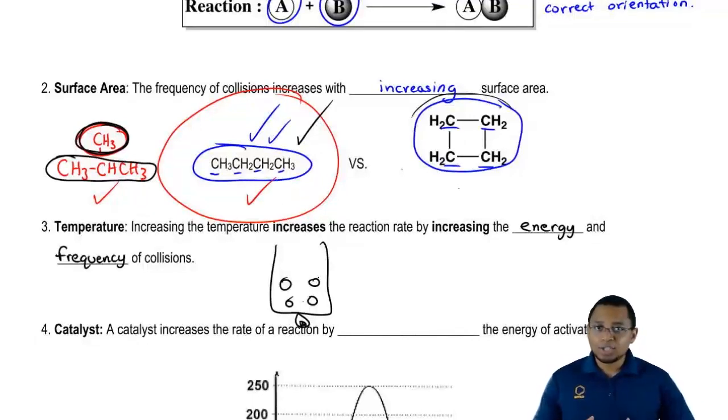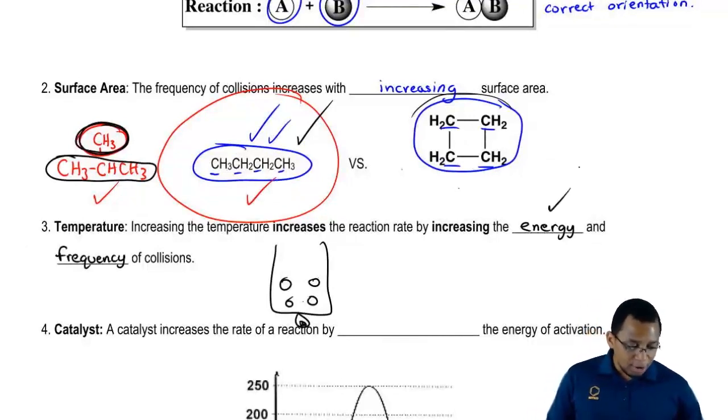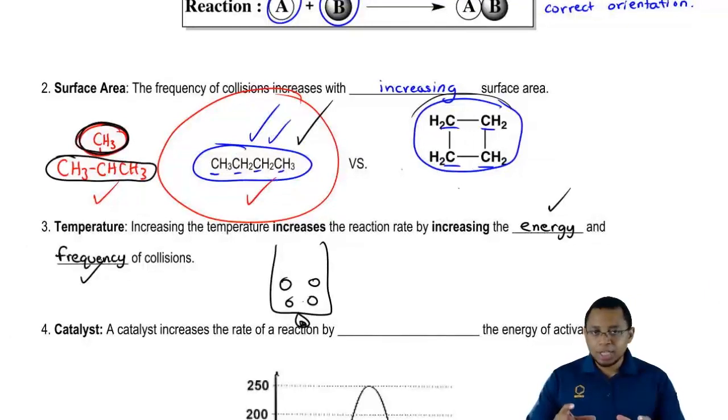And if you're moving faster, you have a greater chance of hitting one another within a given amount of time. So increasing the temperature will increase the energy and the amount of collisions we get within a snapshot of a moment.